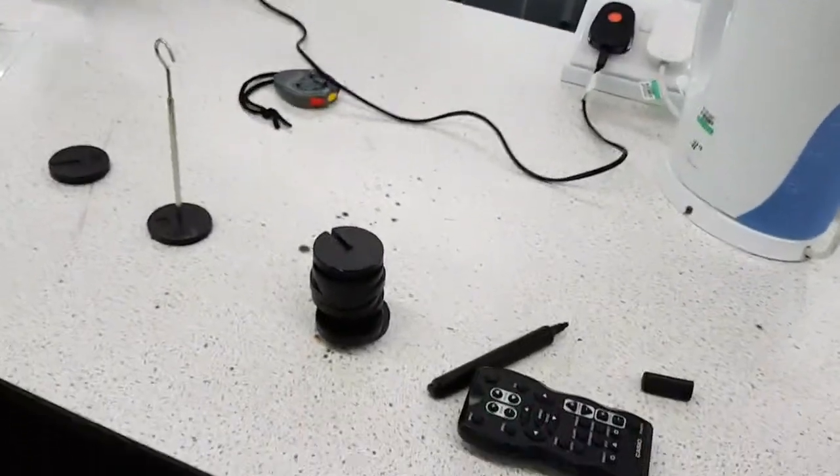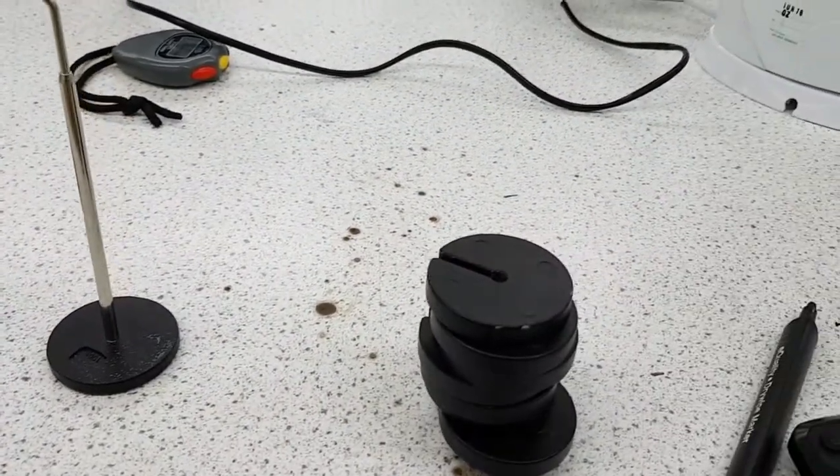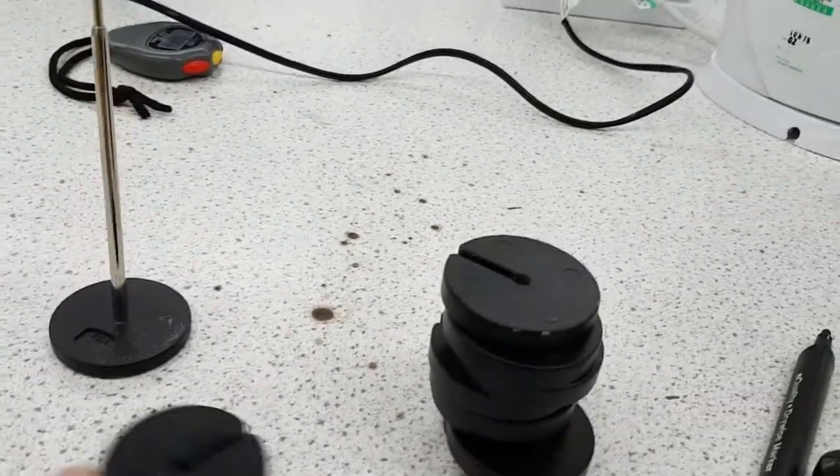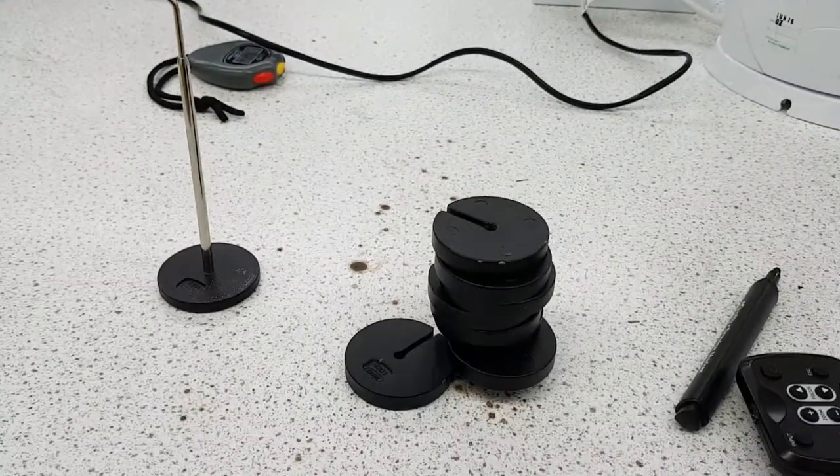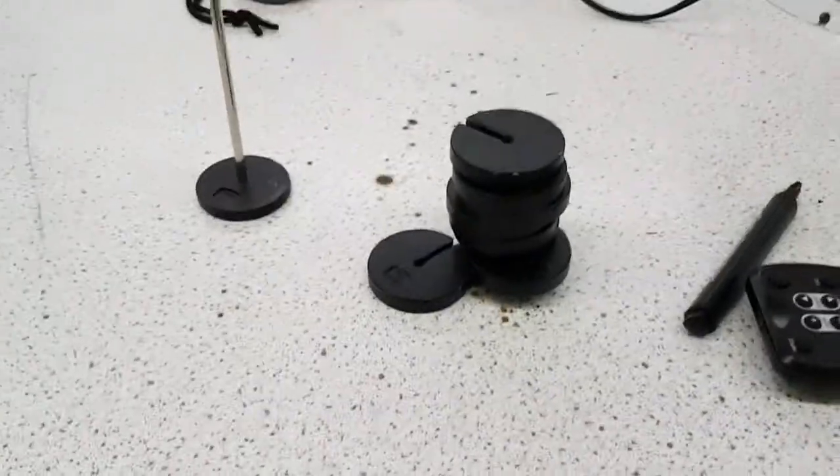A meter ruler and a spring that I've just attached onto the clamp. Also, we're going to need 100 gram masses. Each one of these are 100 grams, and we're going to go up to a maximum of 800 grams. So let me explain how to do this experiment.